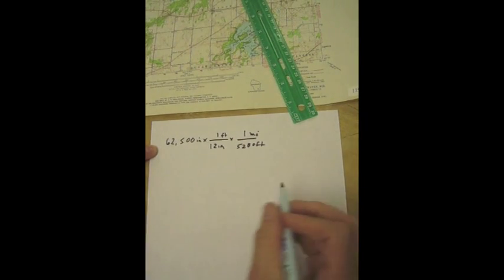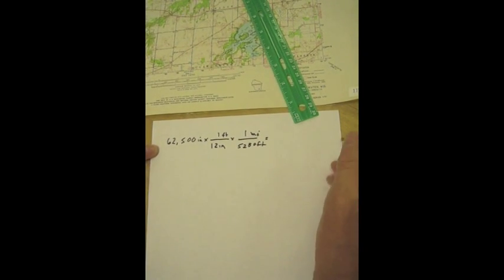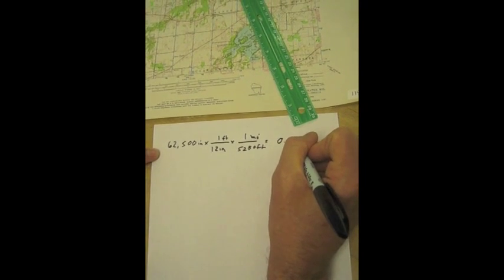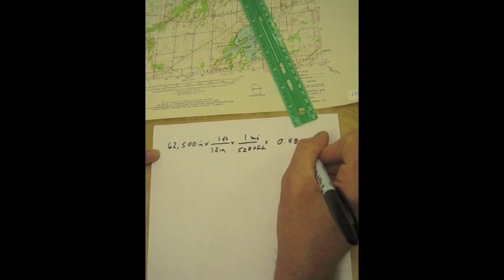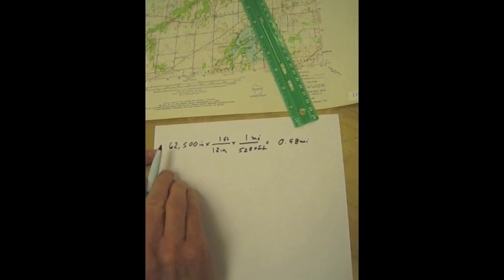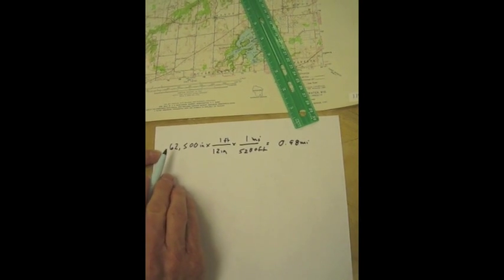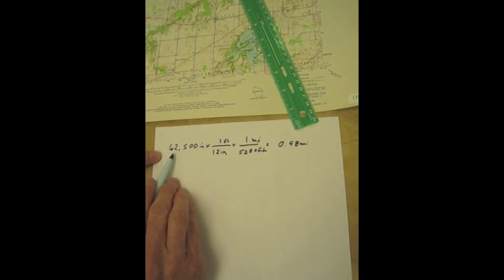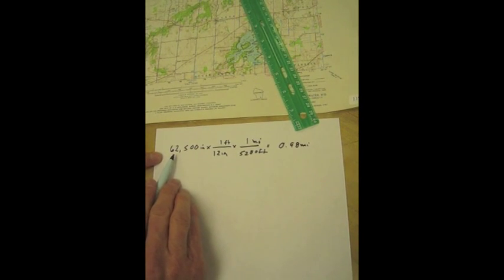So if you do all that math with your calculator, you come up with something that's 0.98. So 1 inch on my map, which is 62,500 inches out on the ground, you convert it to miles.